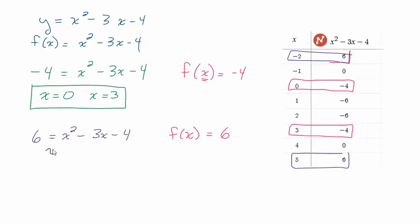So the answers are x could be 5 or x could be negative 2. Now in function notation, just a little review of function notation, what that's saying is f of 5 equals 6.